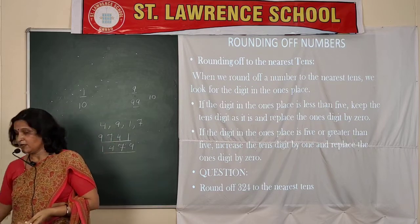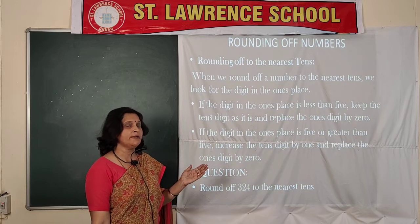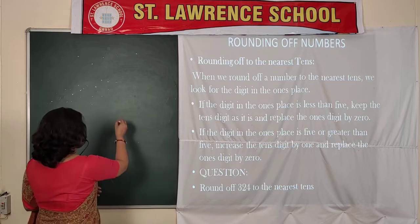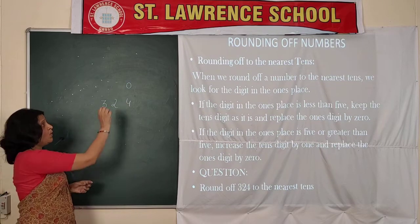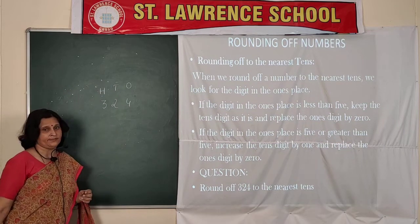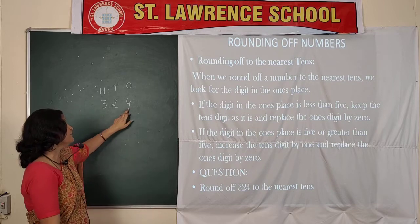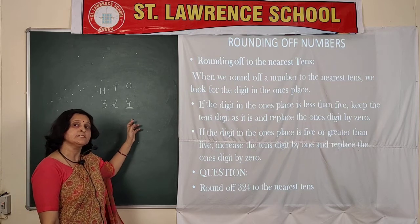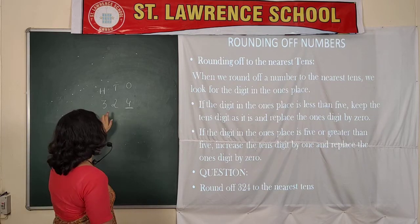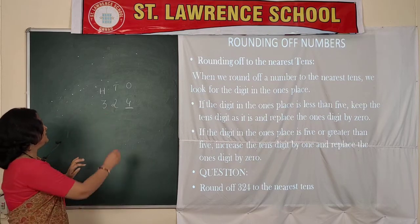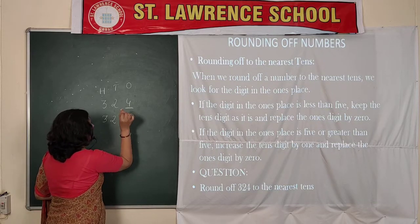Now the topic is rounding off numbers. First, rounding off to the nearest tens. Suppose the number given is 324. We write the place values: ones, tens, hundreds. To round off to the nearest tens, we look at the digit on the ones place, which is 4. Since 4 is less than 5, the tens digit stays the same and the ones digit is replaced by 0, giving us 320.